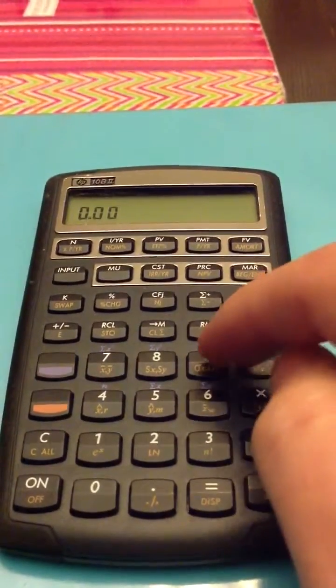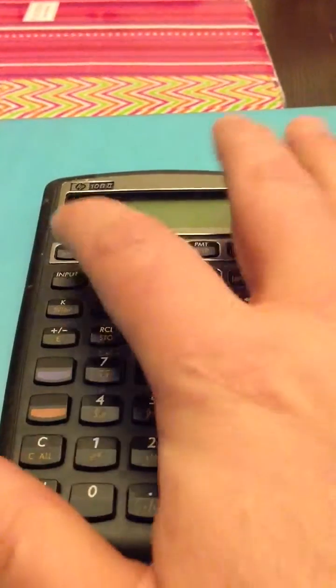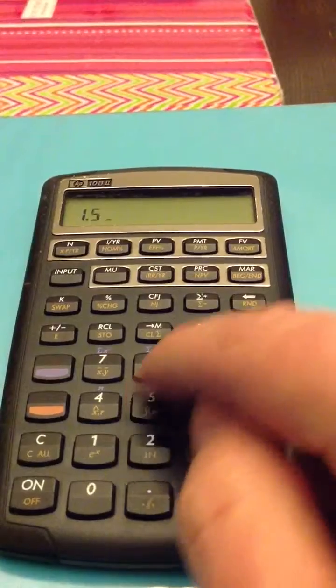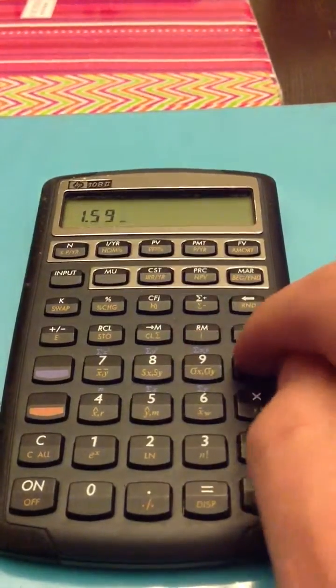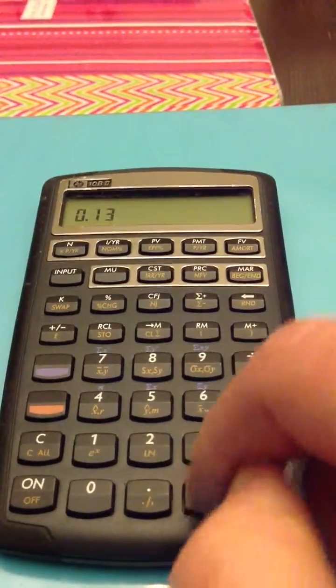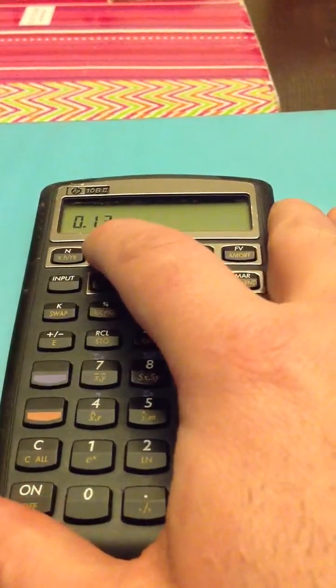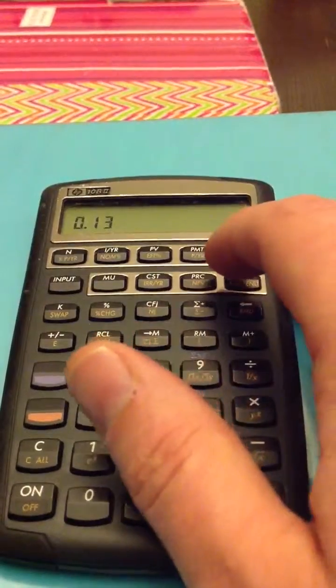Now we do the same calculation, 60 months, except now we're going to use the interest as a monthly total, 1.59 divided by 12, which is equal to 0.1325, 0.13 on your display. That's your interest.